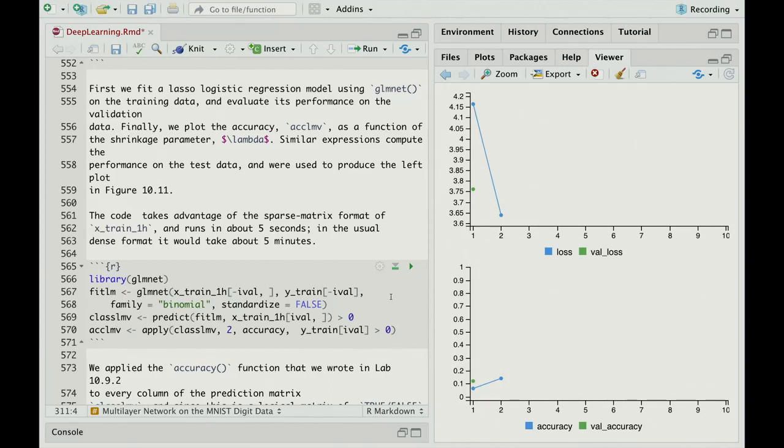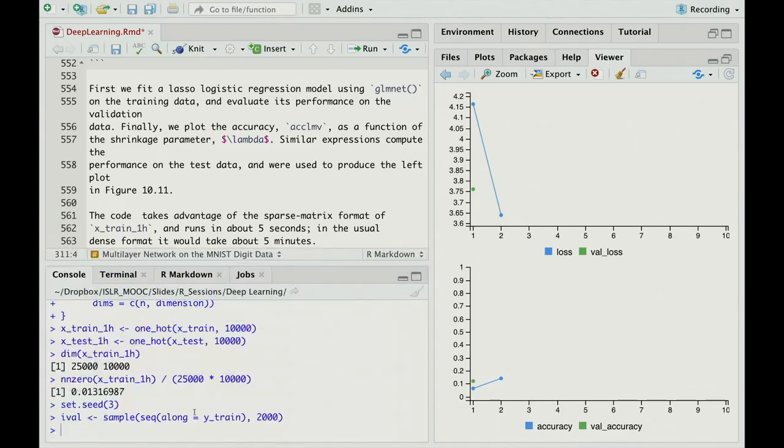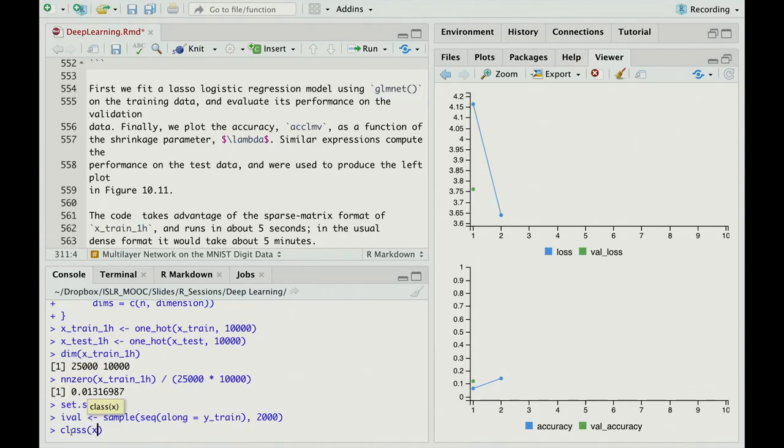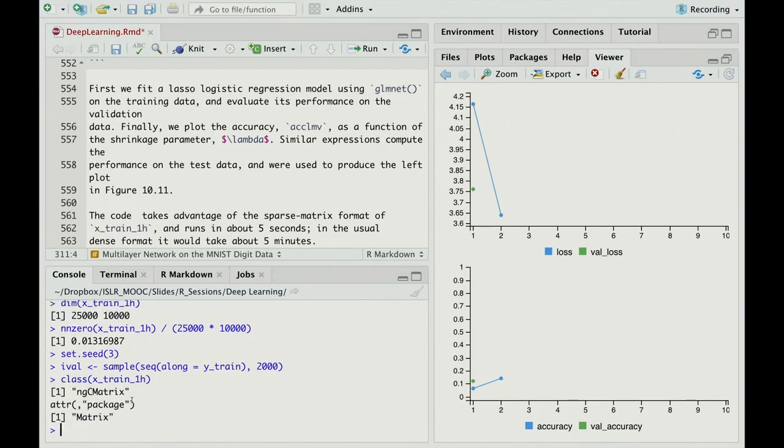Yes. So if one had to look at the class of X-train, you'd see it would be a sparse matrix. Yeah. Should we do that? Yeah. Okay. So let's see. What's it? X underscore. NG matrix? Yeah. So I forget what these things, but it's a column sparse matrix from the package matrix. Okay.